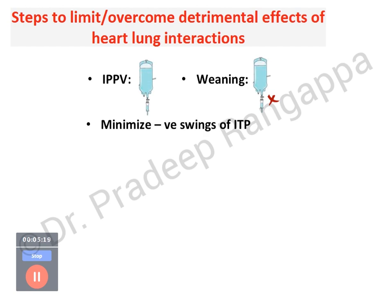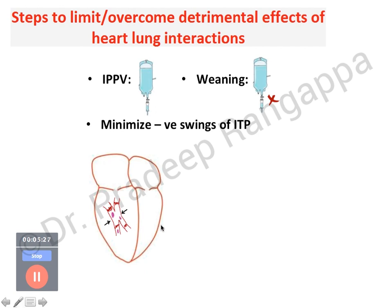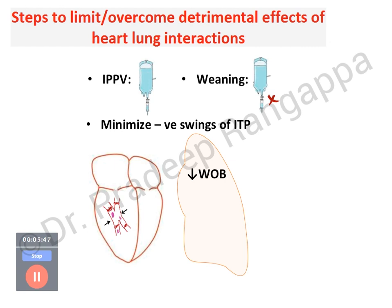Steps should be taken to minimize negative swings of intrathoracic pressure. When someone is mechanically ventilated, efforts should be made to augment myocardial contractility, since contractility gets affected. There can be myocardial dysfunction, and effort should be made to reduce the work of breathing, as it has a negative bearing on cardiopulmonary interactions. Another important step is to prevent hyperinflation of the lung, because hyperinflation increases pulmonary vascular resistance.